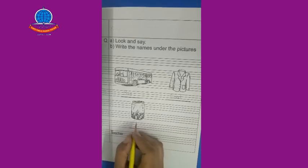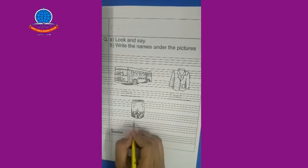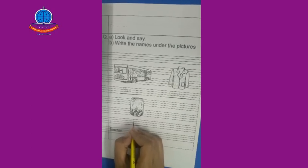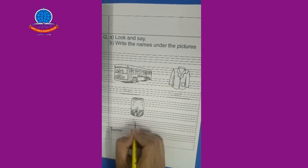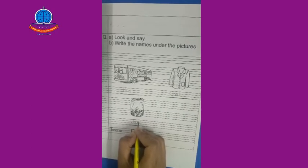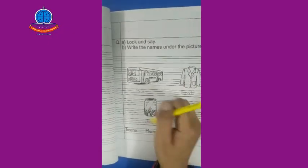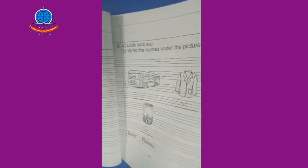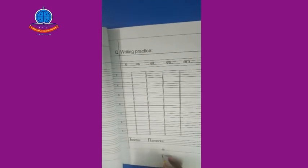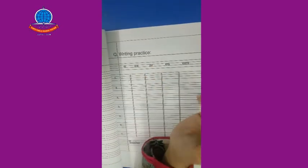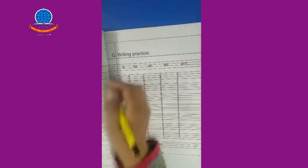And there is a jar. Jar — we will write here: jar, jar, jar. You can also color in these objects. You have to practice it on page number 49.